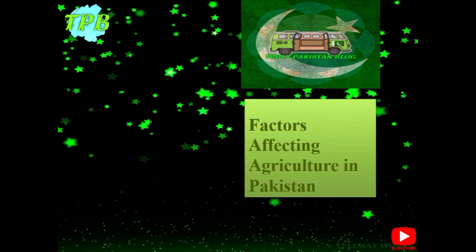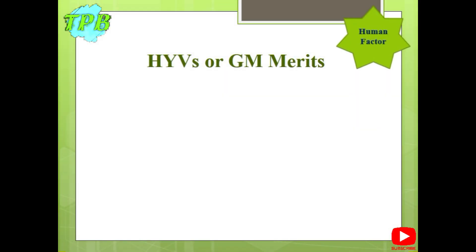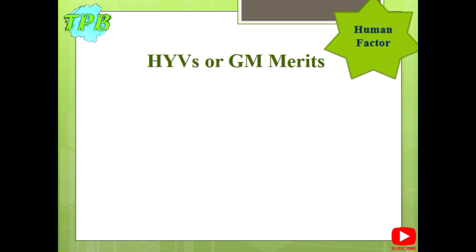One of the most important factors that affects harvesting in Pakistan are HYVs or GMs. HYV stands for High Yielding Varieties and GM stands for Genetically Modified seeds.